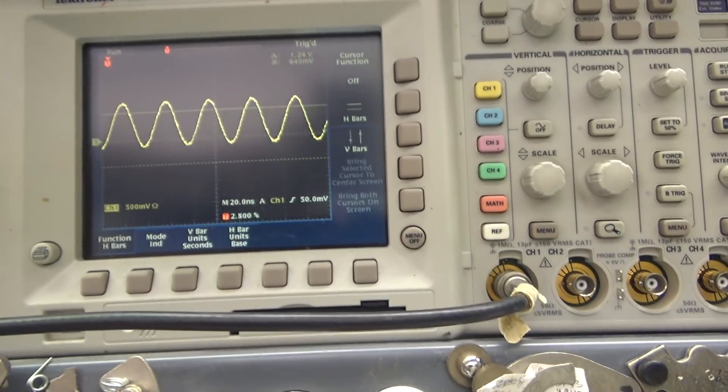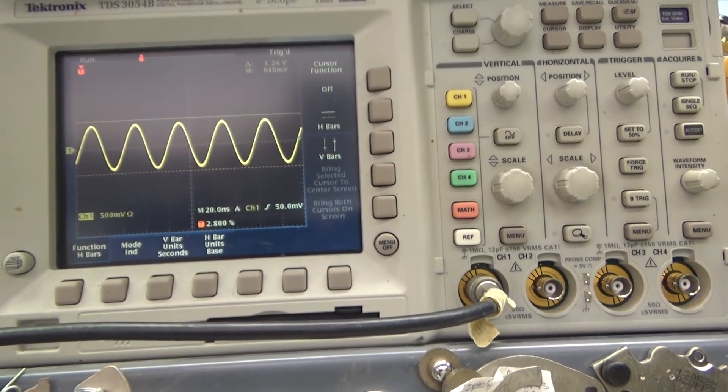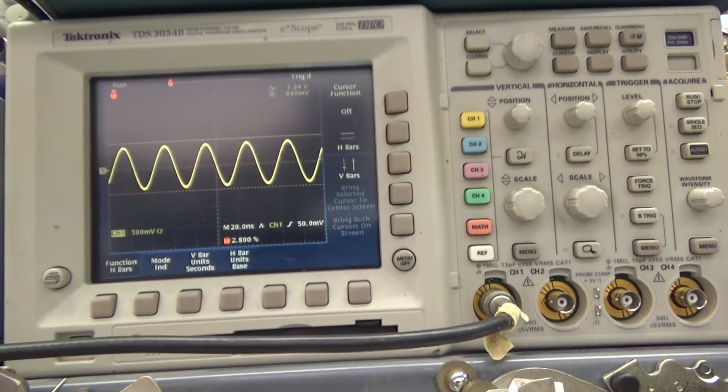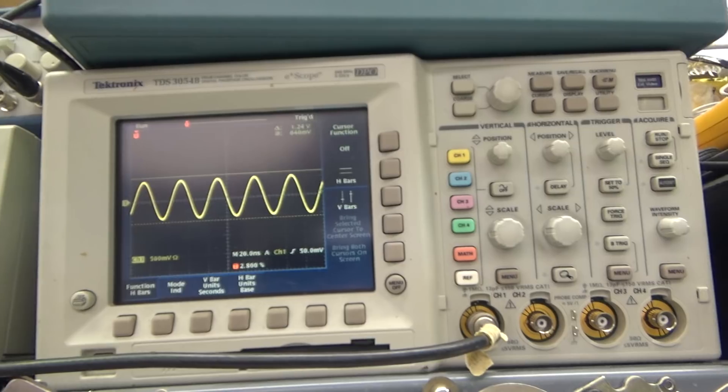As long as you know that going in you can compensate for it but it's not ideal. Here is the voltage offset adjust. So there is your DC bias we were talking about.